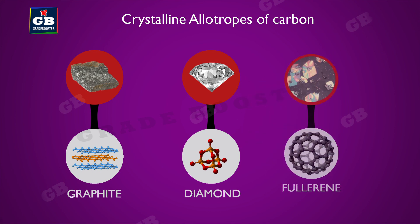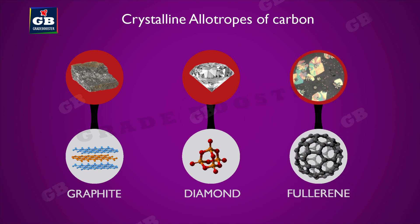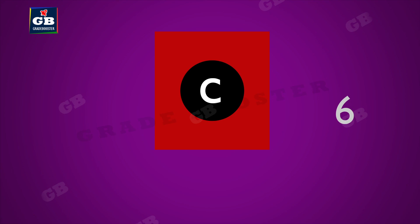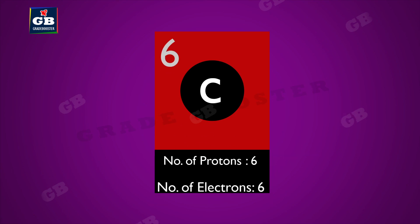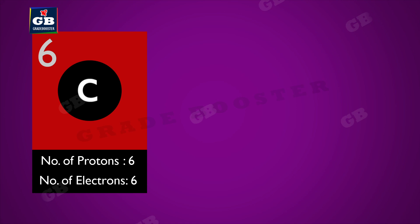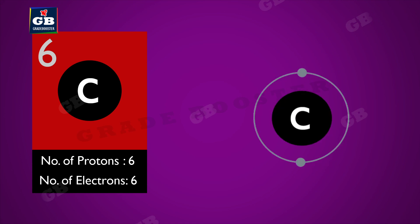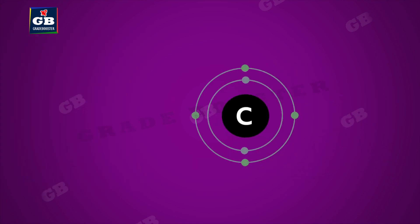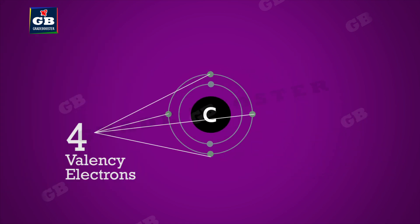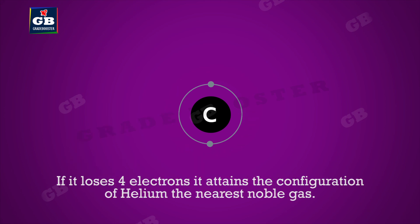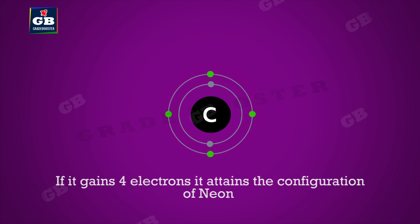The crystalline forms of elemental carbon are graphite, diamond, and fullerenes — these are the allotropic forms of carbon. Carbon is an element with atomic number 6; it has 6 protons and 6 electrons. Its electronic configuration is 2, 4, and the free electrons in its outermost shell are 4.